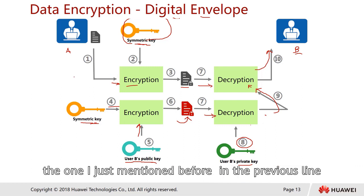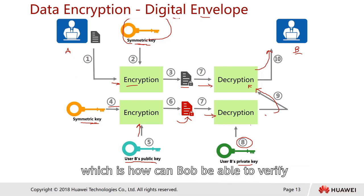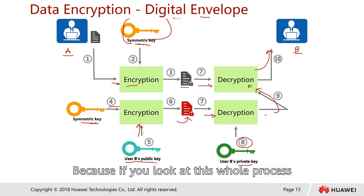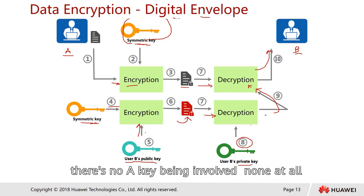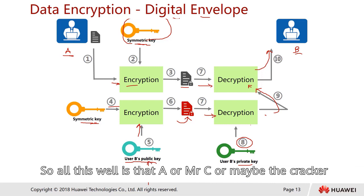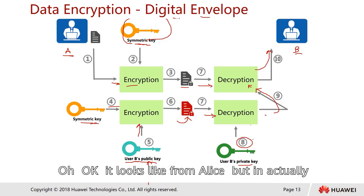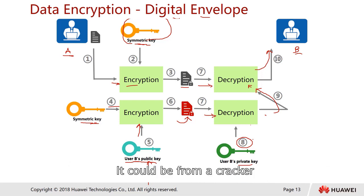However, the problem is that there is no verification of who the sender is. Anyone — including a cracker — can use Bob's public key to send a message to Bob, and Bob has no way to confirm the message is really from Alice. Bob could accidentally open malicious content believing it came from Alice.